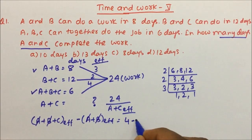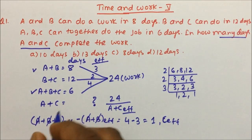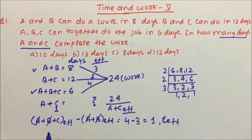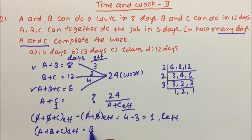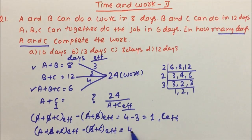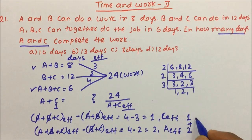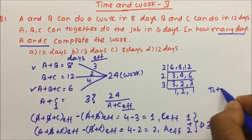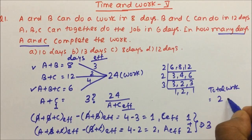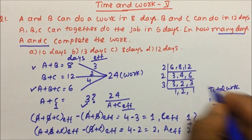A+B+C efficiency is 4 and A+B efficiency is 3, so C efficiency = 1. For A's efficiency: (A+B+C) minus (B+C) — B and C cancel — giving 4 − 2 = 2, so A's efficiency is 2. A+C efficiency = 2 + 1 = 3. Total work is 24, so 24 ÷ 3 = 8 days. The answer is 8 days.